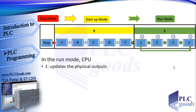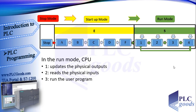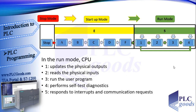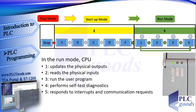Now let's see run mode. In this mode, the CPU first updates the physical outputs, then reads the physical inputs and updates its input image memory. After that, it runs the user program, starting with OB1 as the main programming block. Then the CPU performs some self-test diagnostics. Every time an interrupt occurs, the operating system calls the appropriate OB and then comes back to the main program, and also responds to communication requests. In this mode, the run/stop LED will be green.